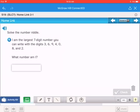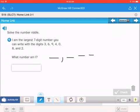And then number 6. I'm the largest 7-digit number you can write with the digits 3, 6, 9, 4, 0, 8, 2. So again, I'm going to write my places. I'm going to need some more because I'm doing 7 places. That goes out to the millions. There's my thousands.